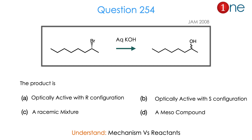Let us look at the next question. The starting material is a long-chain secondary bromide. You are using aqueous silver oxide (Ag₂O). The bromide converts into an alcohol. They are asking what is the product and its nature — optically active with R-configuration, optically active with S-configuration, a racemic mixture, or a meso compound. From the substitution reaction and the four possibilities, you might realize the question is really about mechanism versus reactants. The answer is B. Let us see how.